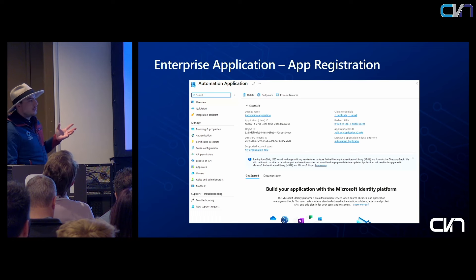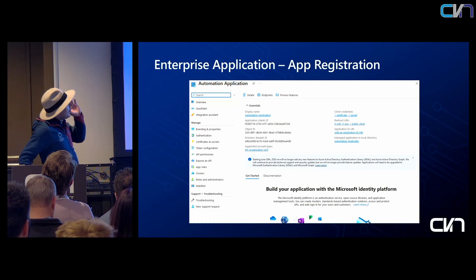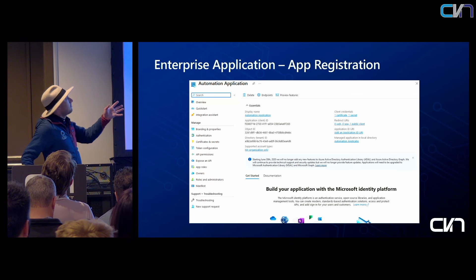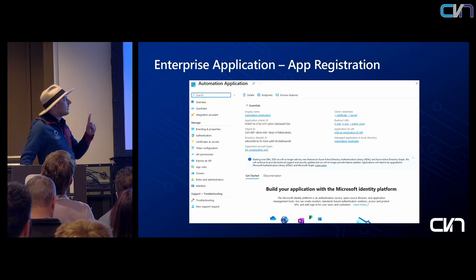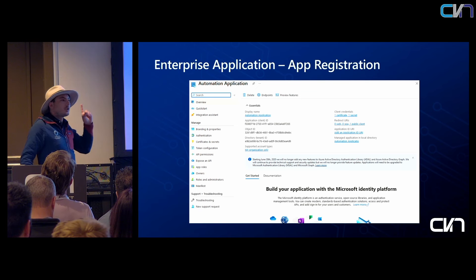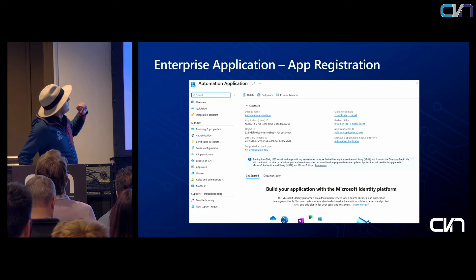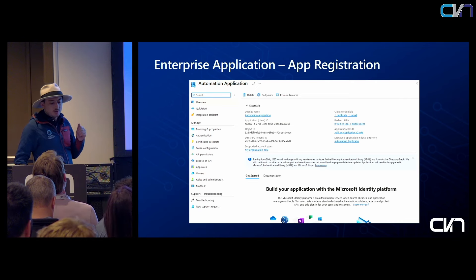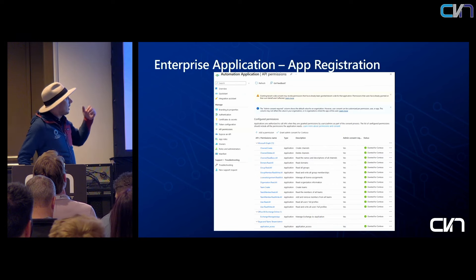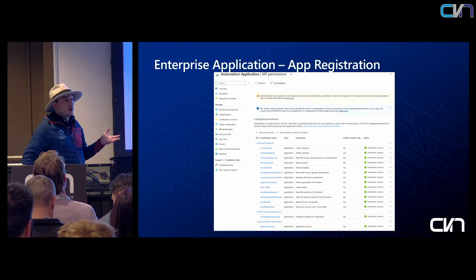Here's what it looks like in Entra ID once you've built it. You can see I've got my client ID at the top and my directory ID. These are the two things I need to ensure I'm going to connect to whatever customer I have. I need the tenant ID of the customer, but the client ID will always be the same regardless of which customer tenant it's in. The next thing we need to know is: how are we going to connect, and what is the permission token?